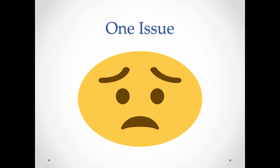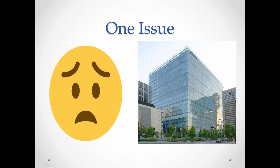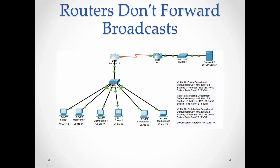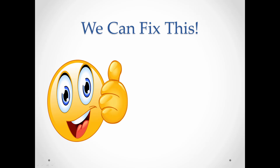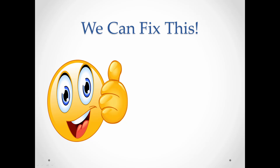You might have one issue. Let's say you work for a huge corporation that has a DHCP server on a separate network. Remember when I said DHCP uses a broadcast? Routers do not forward broadcasts. So if your DHCP server is on a different network and cannot pass through the router, how exactly will you be able to get an IP address? Don't worry - we can handle this.